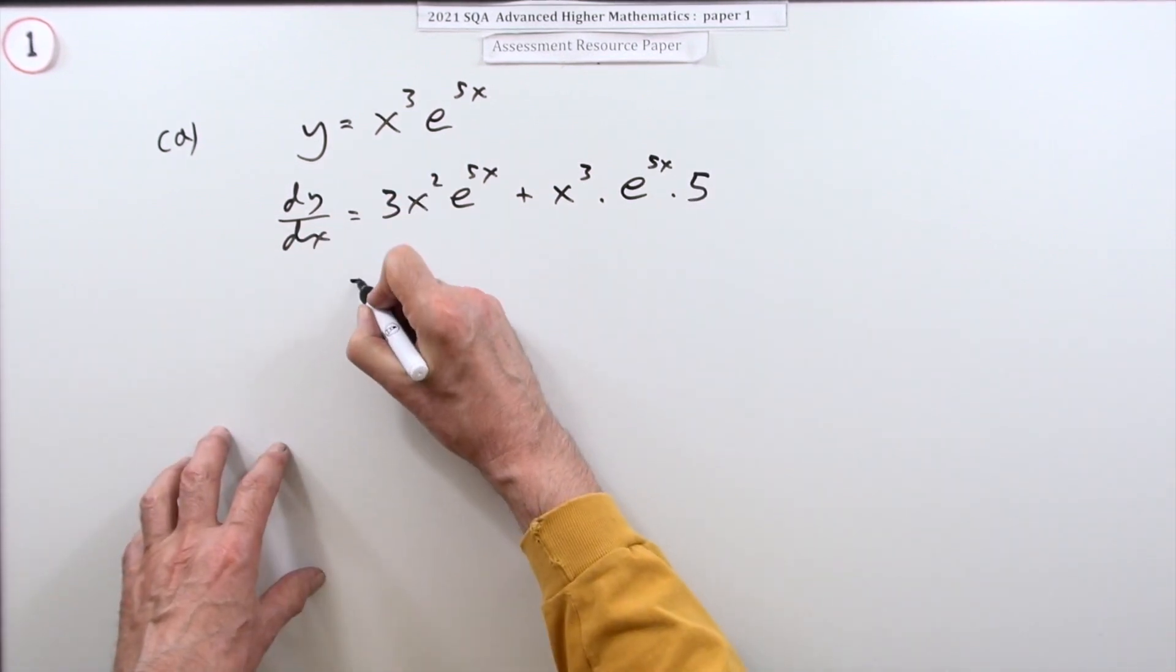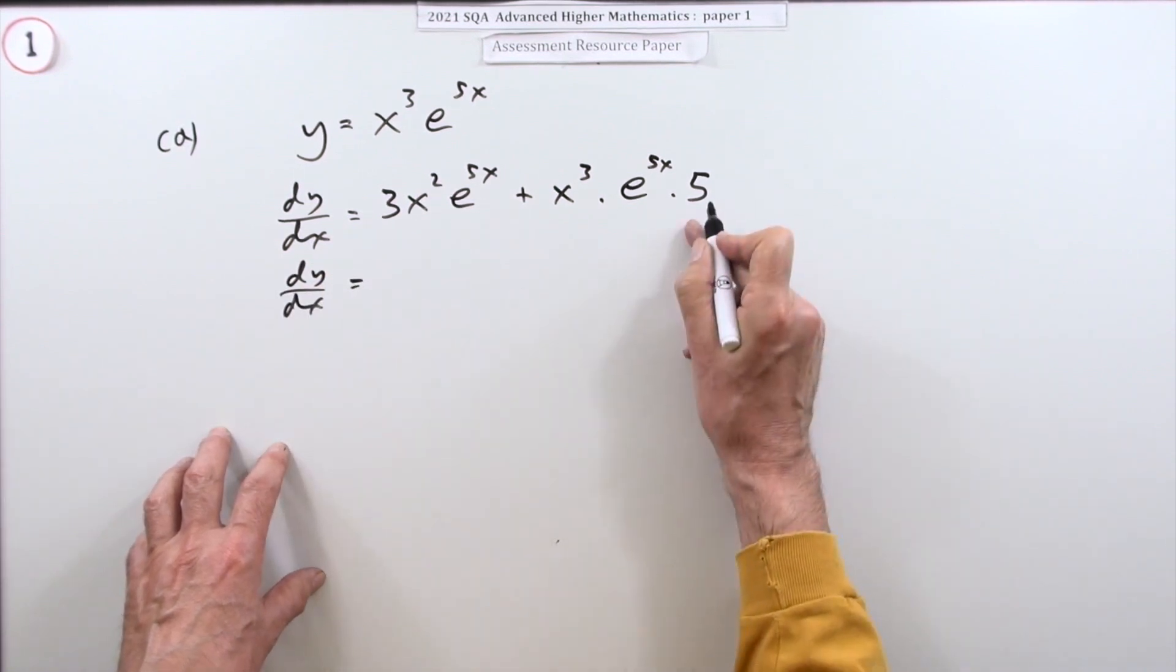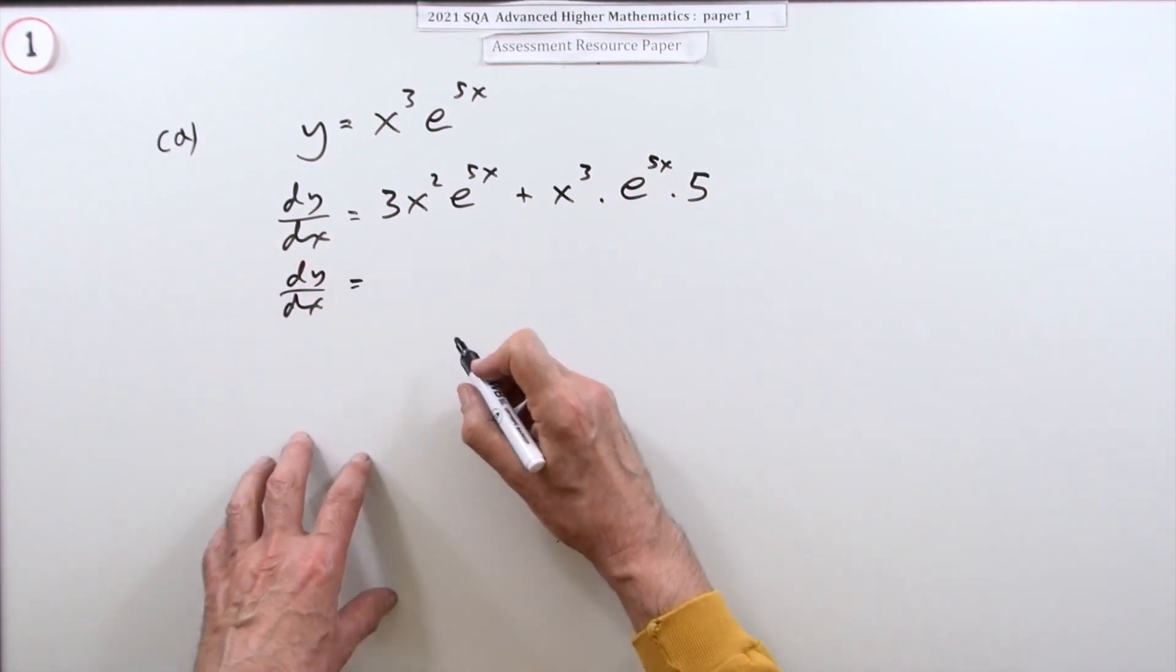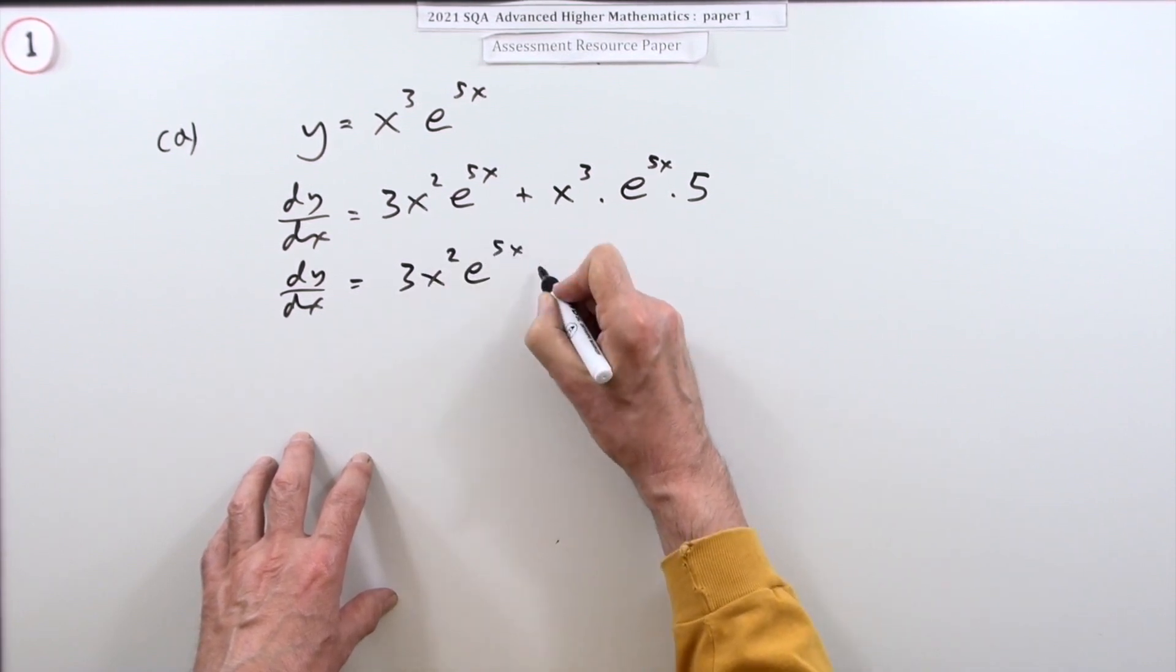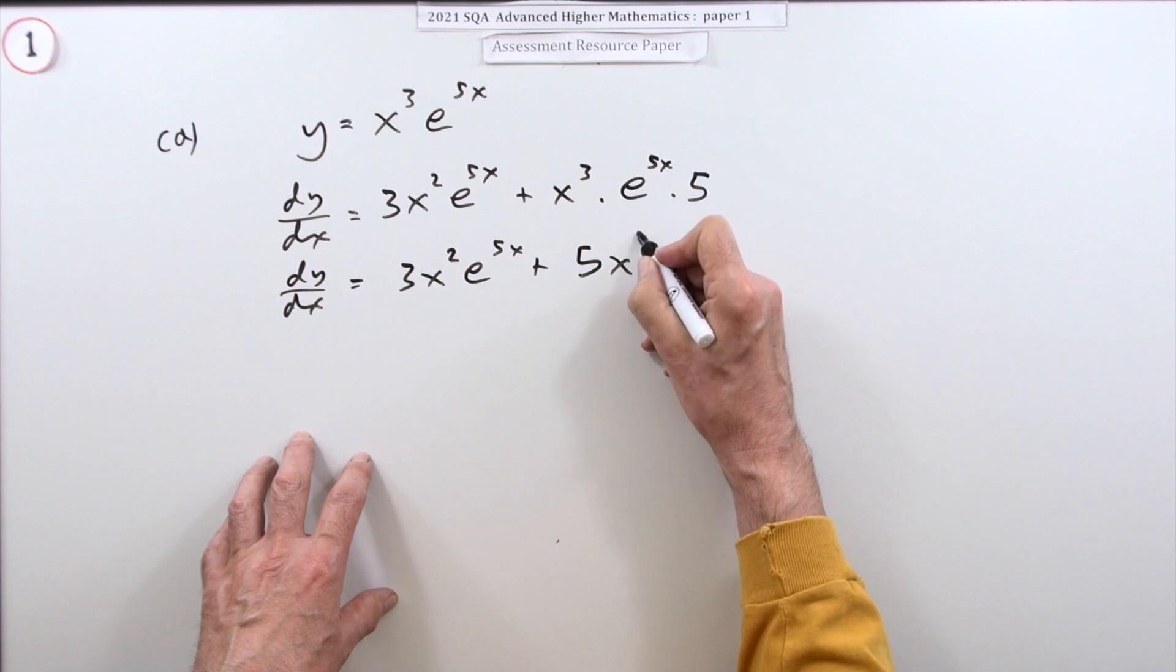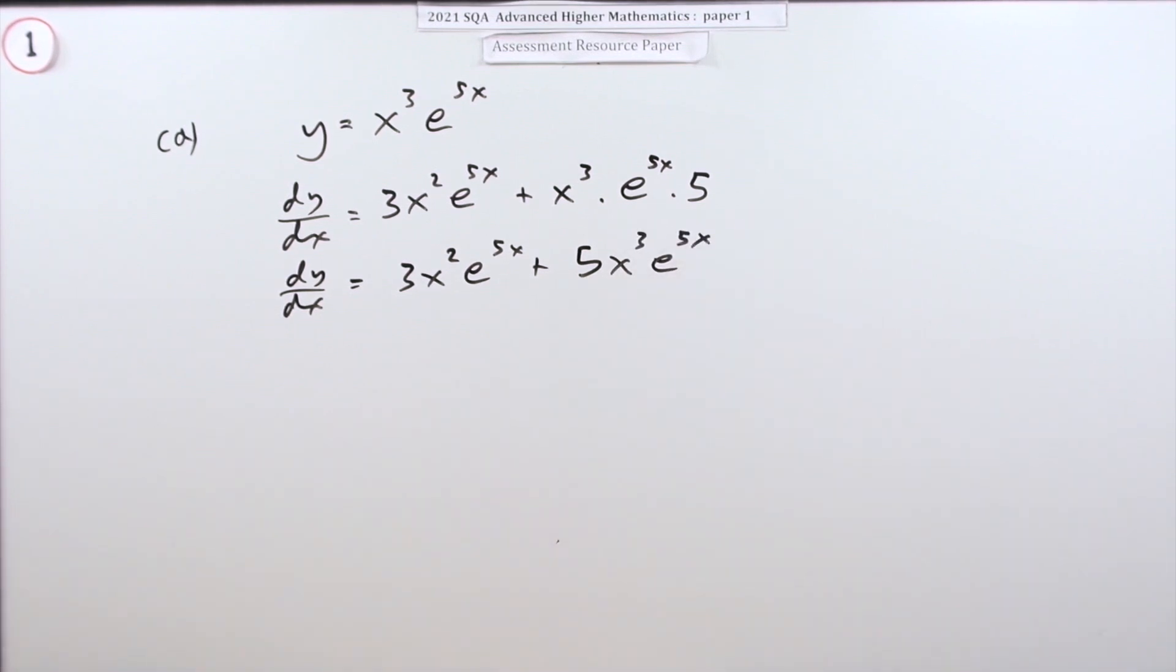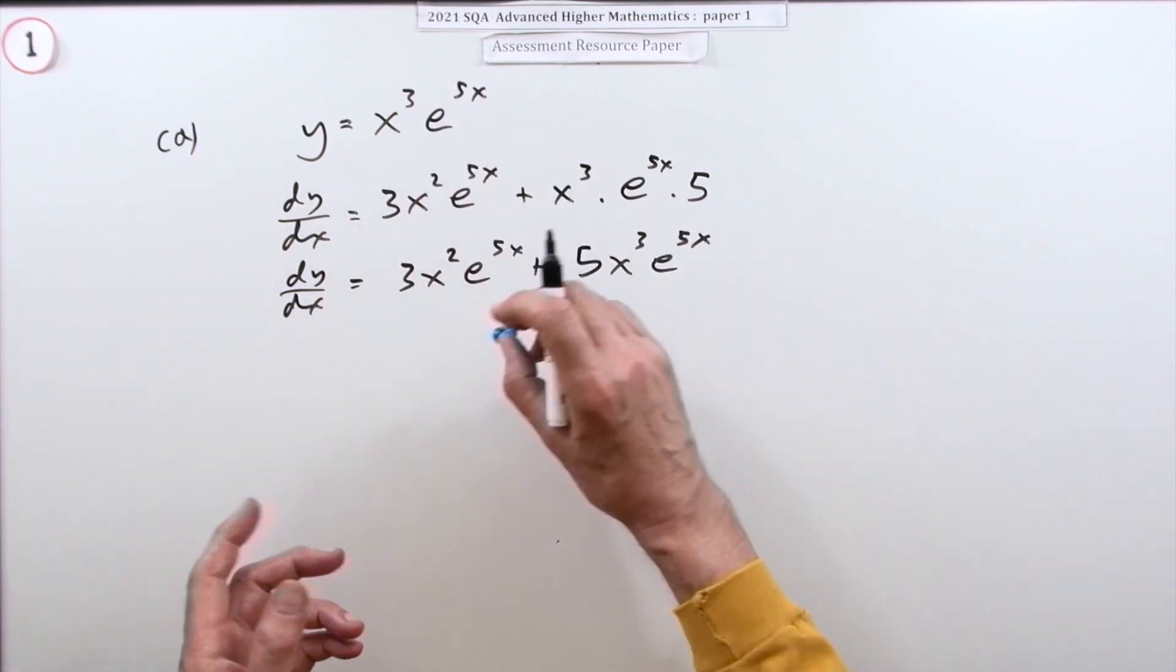Then just write that again. You could have just put that at the front and finished there. So that's 3x²e^(5x) + 5x³e^(5x). Now they've just left it like that and they're giving the two marks - starting and finishing, the usual thing.